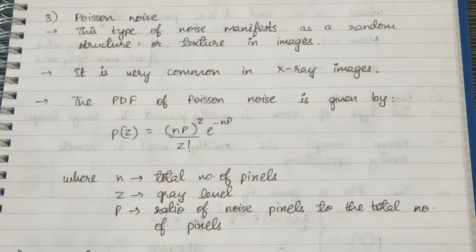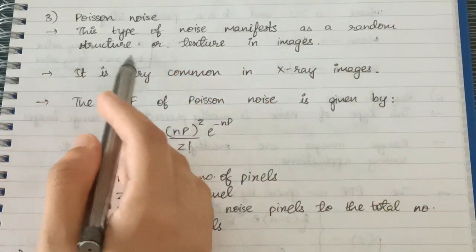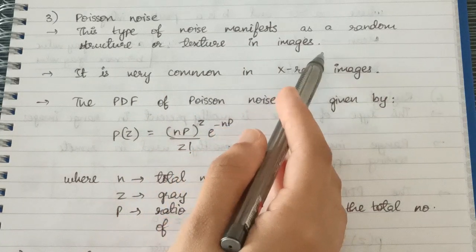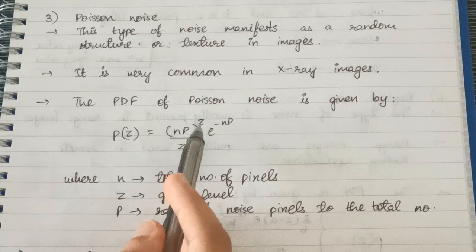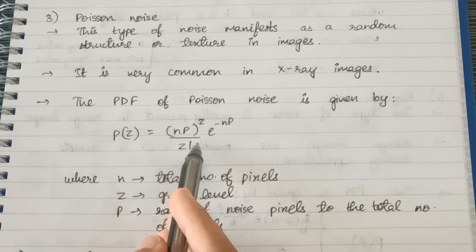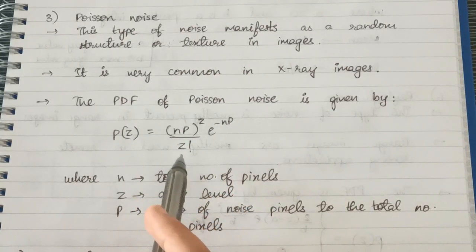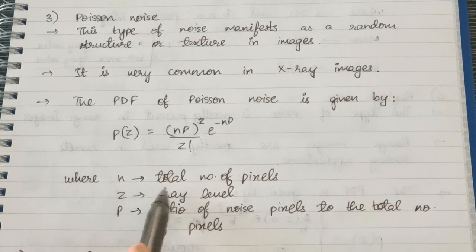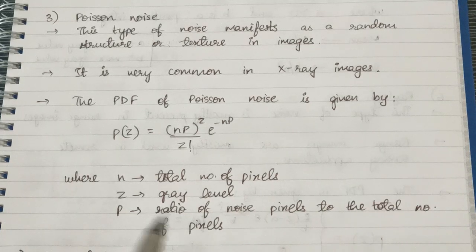Next is Poisson noise. This type of noise manifests as a random structure or texture in images and is very common in X-ray images. The PDF of Poisson noise is: p(z) = (np)^z · e^(−np) / z!, where n is the total number of pixels, z is the gray level, and p is the ratio of noise pixels to the total number of pixels.